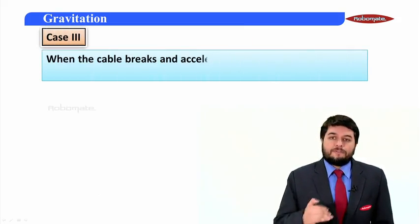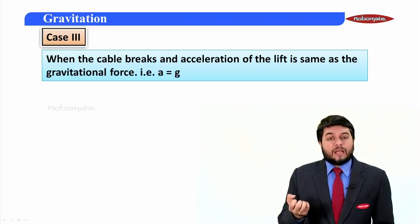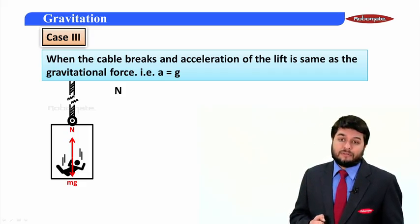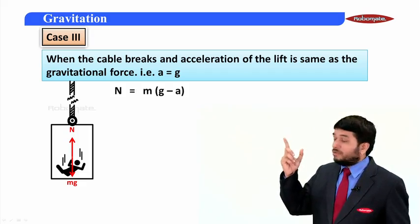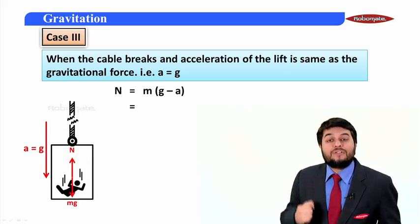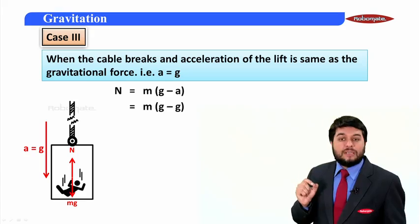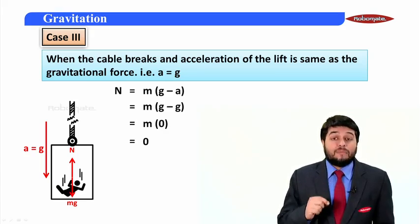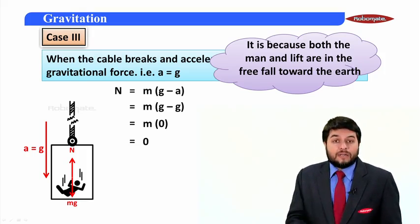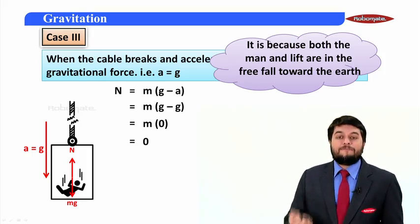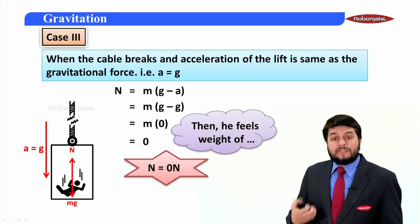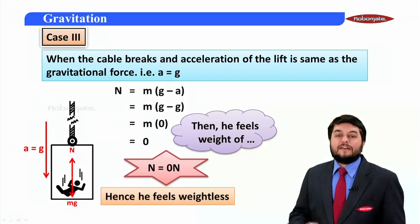Now the final condition — if the cable of the lift breaks, the lift and the person are freely falling down. The acceleration of the lift is the same as the acceleration due to gravity. Starting from N = m(g − a) and substituting a = g, we get N = m(g − g) = m × 0 = 0. The normal reaction is zero because both the man and the lift are freely falling with the same acceleration due to gravity. The person feels a weight of 0 N, and this feeling of no weight is called the weightlessness condition.